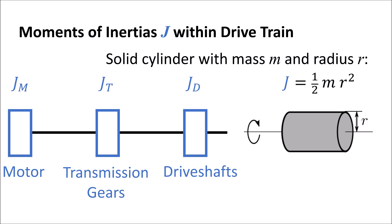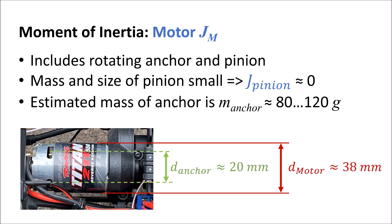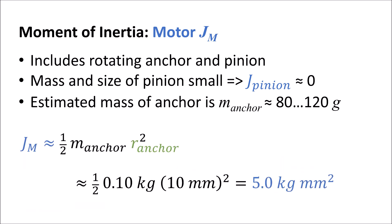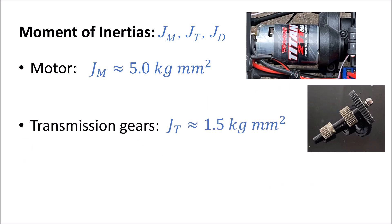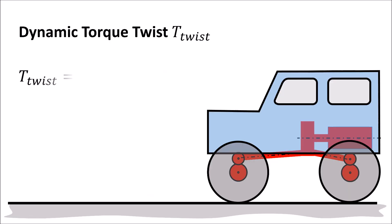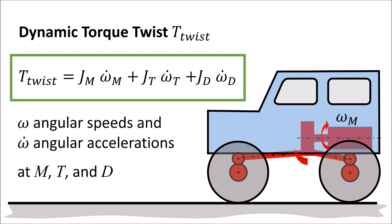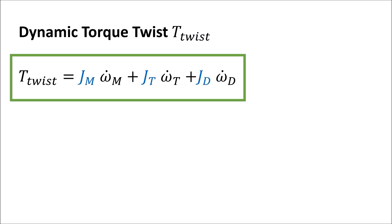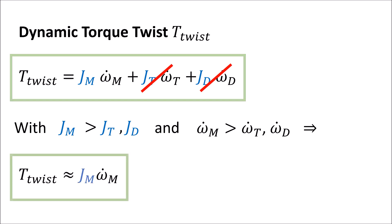The moments of inertia can be roughly estimated when knowing the masses and geometries of the rotating parts. The torque twist is a function of these moments of inertia and their corresponding angular accelerations. As the moment of inertia and rotational accelerations at the transmission and at the driveshaft are clearly smaller than at the motor, we can simplify the torque twist equation.